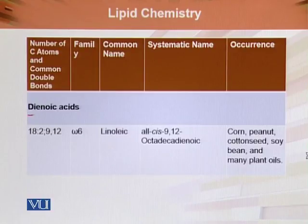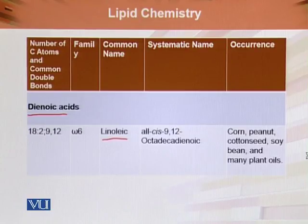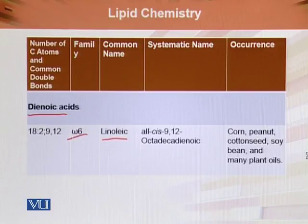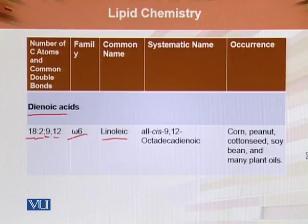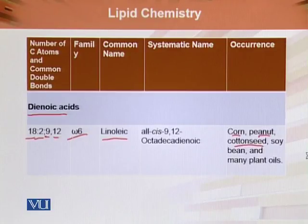Next is linoleic acid, a dienoic acid. It is an 18-carbon compound with two double bonds at the 9th and 12th positions. It is mostly present in corn, peanuts, cotton seed oil — which is also known as 'banola ka tail' in Urdu and is used to make many vegetable ghees — as well as soybean oil and many other plant oils.